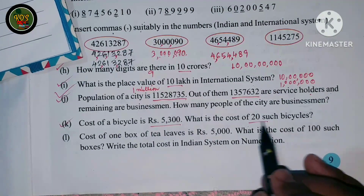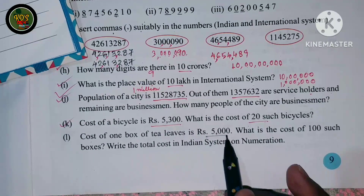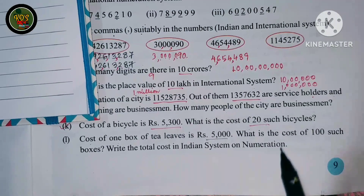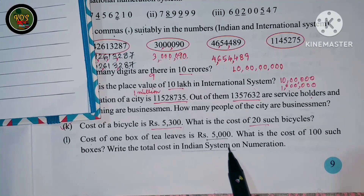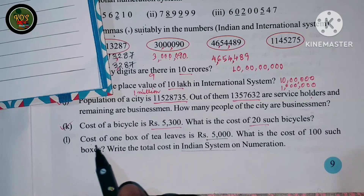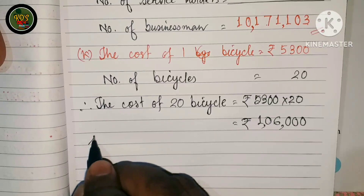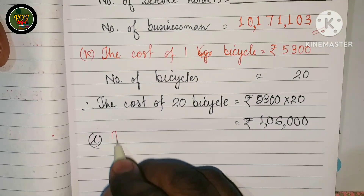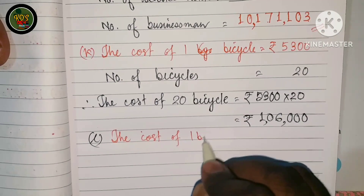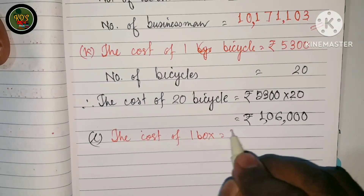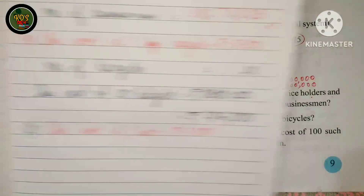The cost of one box of tea leaves is fifty thousand rupees. What is the cost of one hundred such boxes? Write the total cost in the Indian system of numeration.